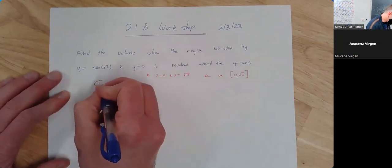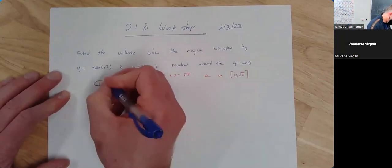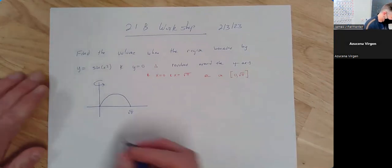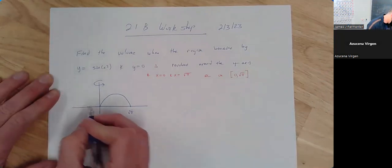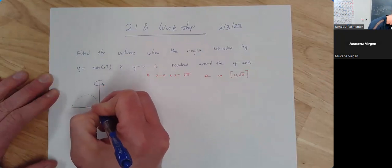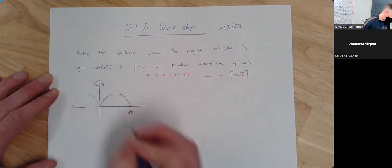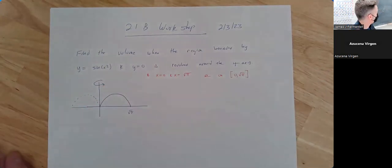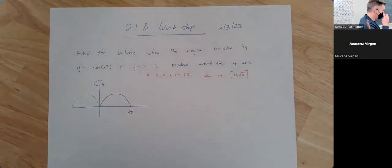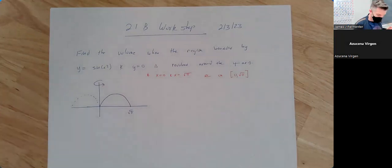So we're revolving this region around the y-axis. We can draw the other little part over here. Now, what kind of strip do we want to use? Do we want to use a vertical strip or do we want to use a horizontal strip? I would say vertical for a couple of reasons.